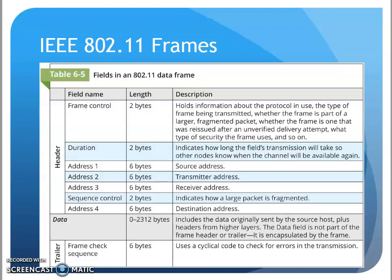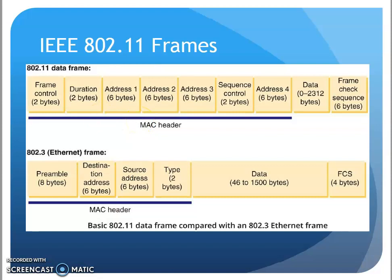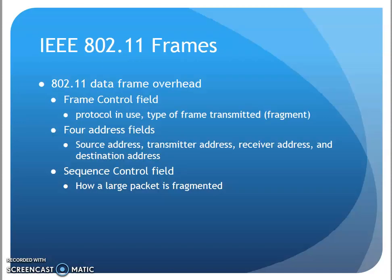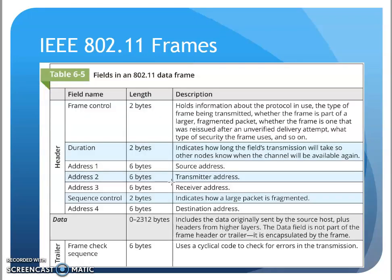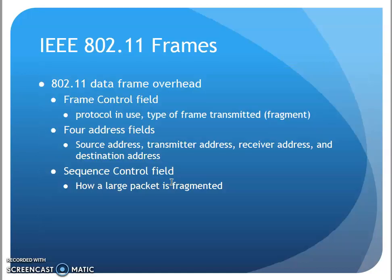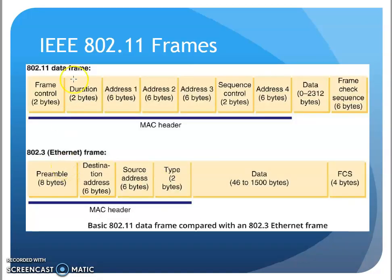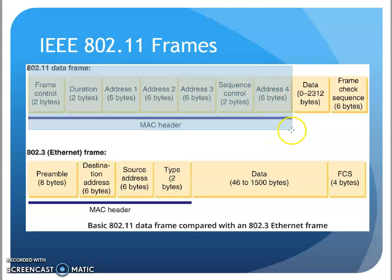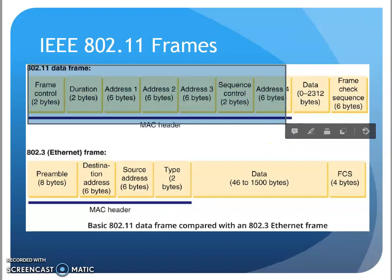We have these additional fields, and this is kind of a breakdown of the frame control field. This is for the type of frame that we are sending. The additional address fields are for the access point and so forth, and the sequence control field indicates how large a packet we are going to fragment. There's a quick breakdown of those additional fields, but the piece to remember is just that there is additional overhead because of these extra header fields that we did not have with wired networks.